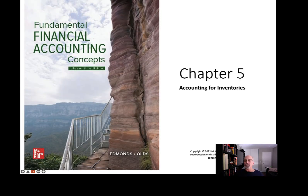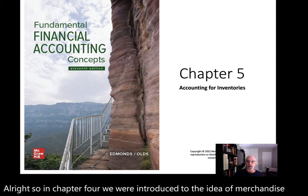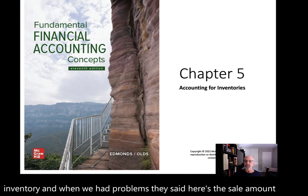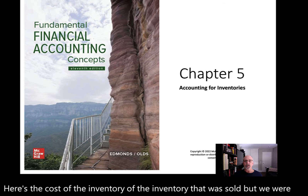In Chapter 4, we were introduced to the idea of merchandise inventory. When we had problems, they said here's the sale amount and here's the cost of the inventory that was sold. But we were never actually told how did they come up with cost of goods sold. Well, Chapter 5 is going to take us into that and answer that question.